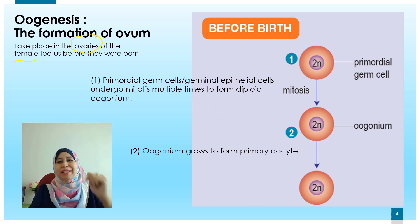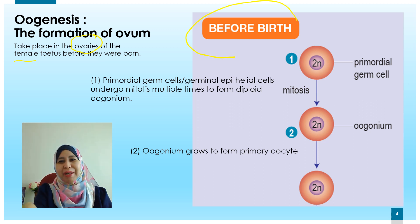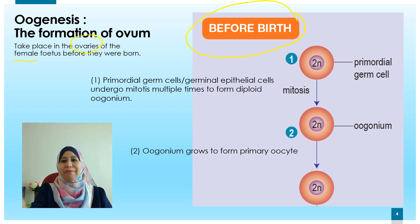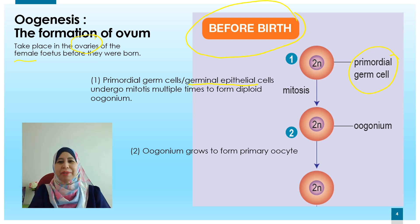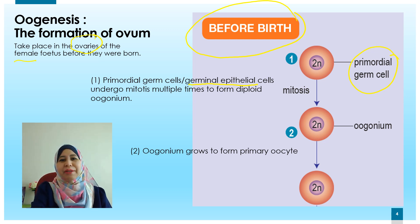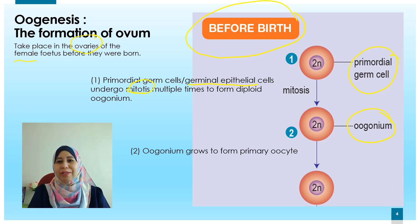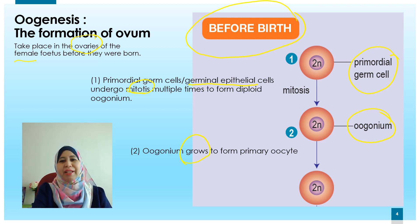Now we look at the sequence of events. Before birth, before the female fetus was born, it started with the primordial germ cell — or in the Form 5 textbook, it is called the germinal epithelial cell. This cell will undergo mitosis multiple times to form diploid oogonium. Oogonium is singular; the plural is oogonia. This oogonium will grow and develop to form primary oocyte.